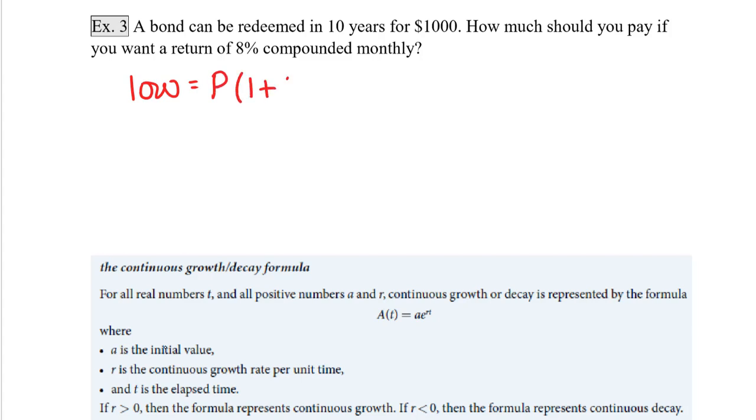We're compounding monthly where n is equal to 12. And we're going to raise that to the n, which is 12, times the number of years, which is 10 years. Now if we simplify this, we get that this is P times 2.21964. And if we divide both sides by 2.21964, we get that P is equal to $450.52.